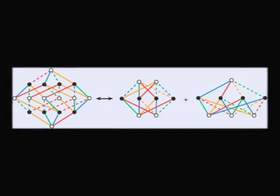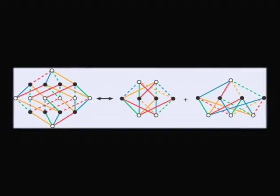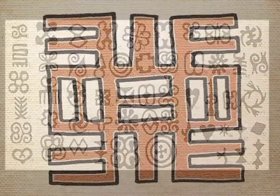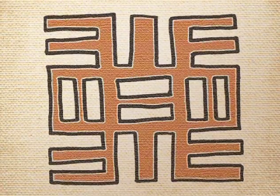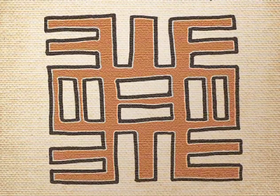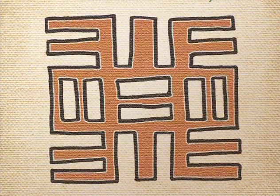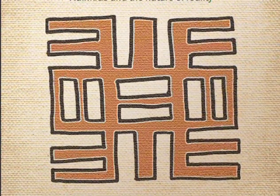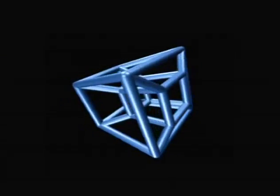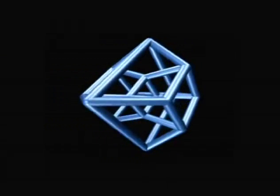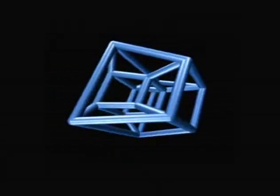Gates and collaborators gave these graphic representations the name adinkras, a West African word for symbol, to assist understanding purely four-dimensional worlds within superstring theory.